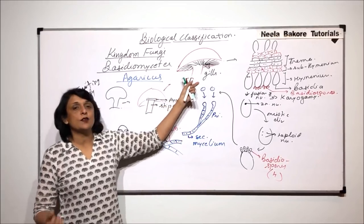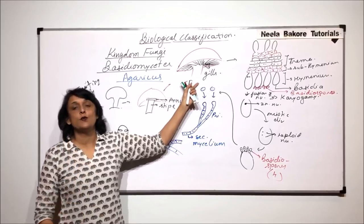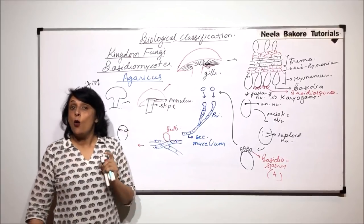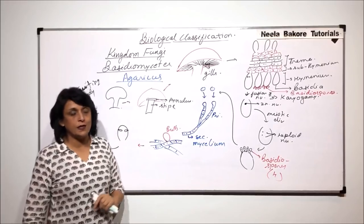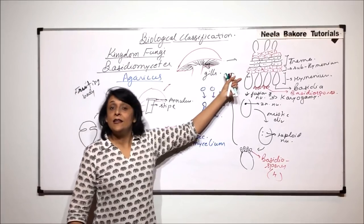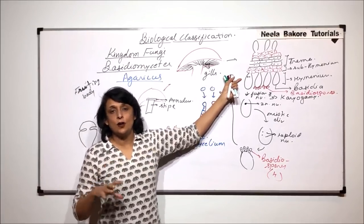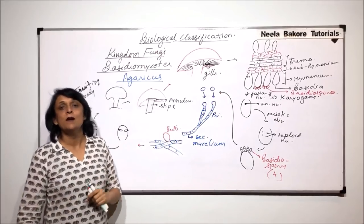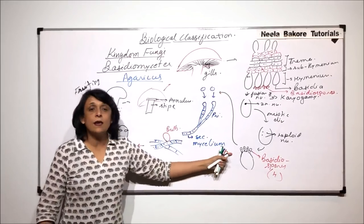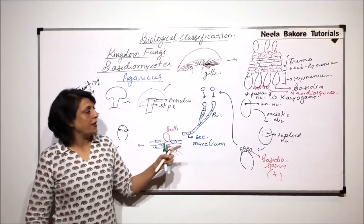This reproductive structure or that mushroom body which is visible to us is seen only during reproductive season. And these are the gills. The entire structure is made up of dicharyonic mycelia, except for the spores which are haploid.